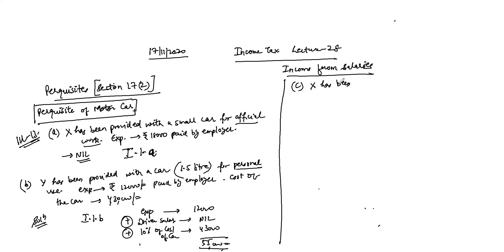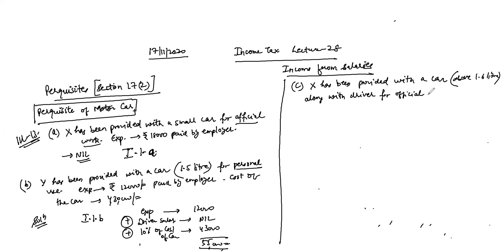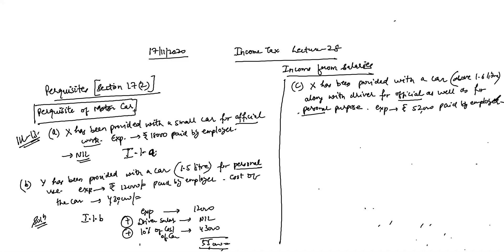Part C: X has been provided with a car above 1.6 litre CC (big car), along with a driver, for official as well as personal purpose. Expenditure is ₹52,000 paid by the employer. Cost of the car is ₹9,50,000.